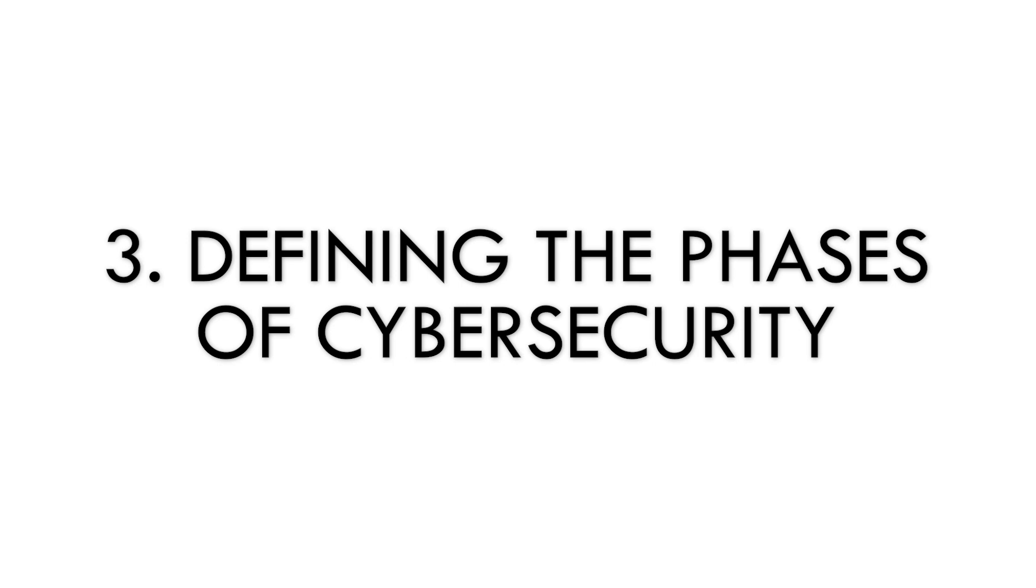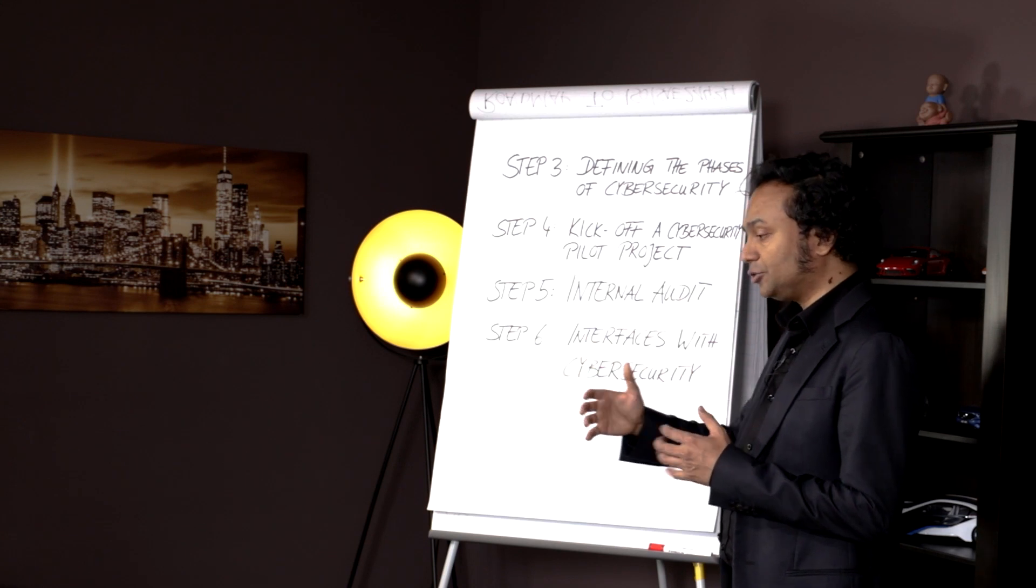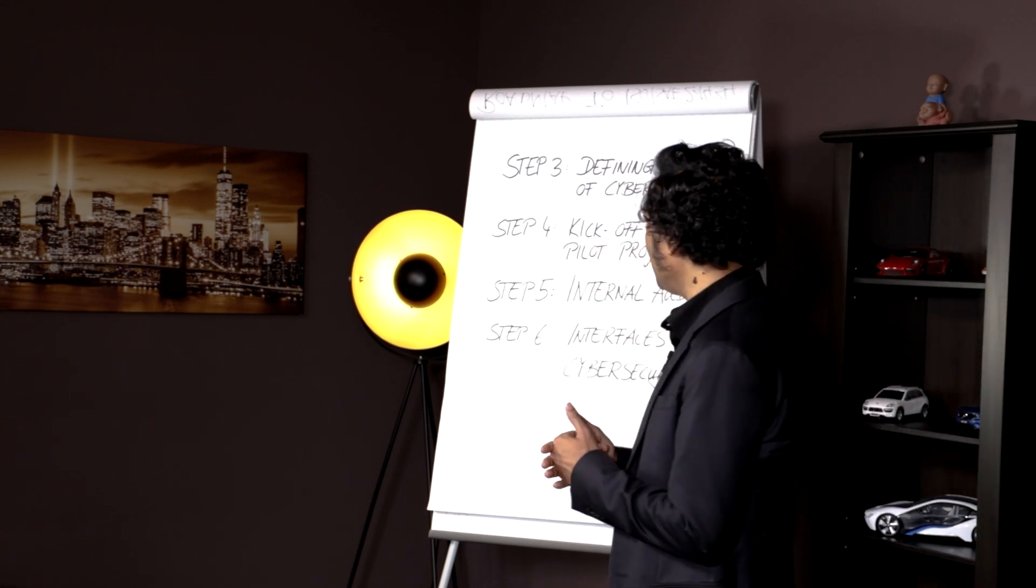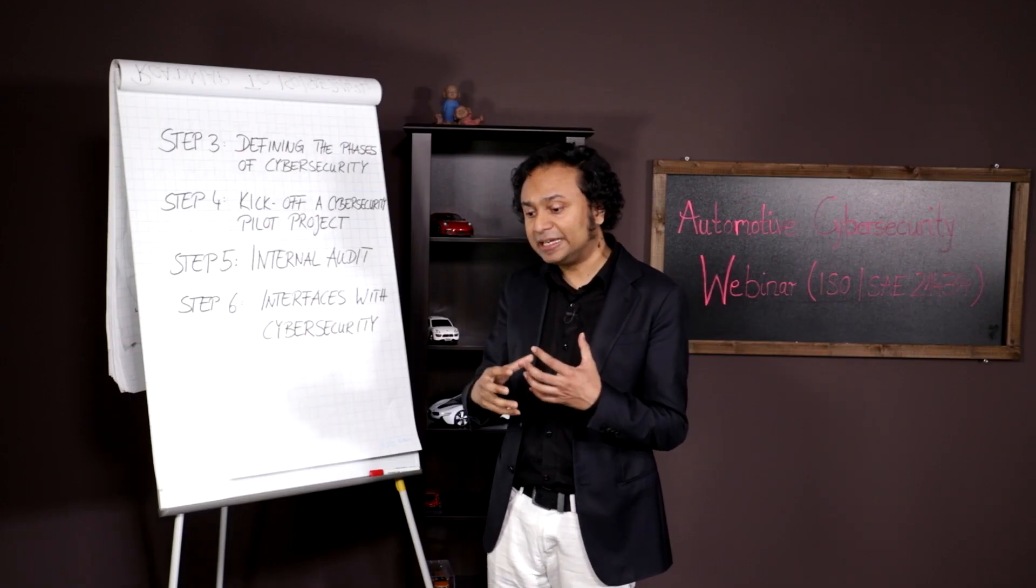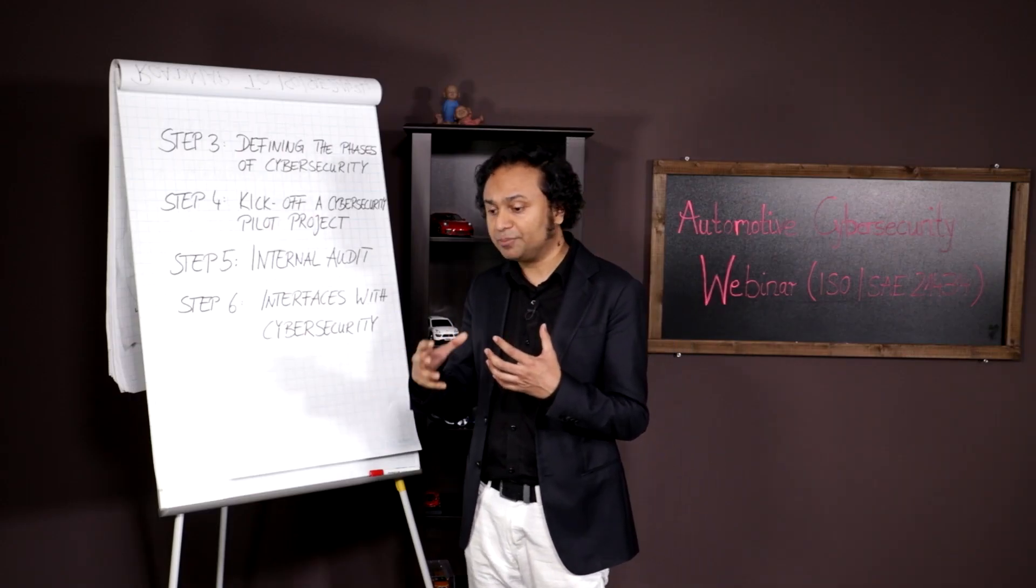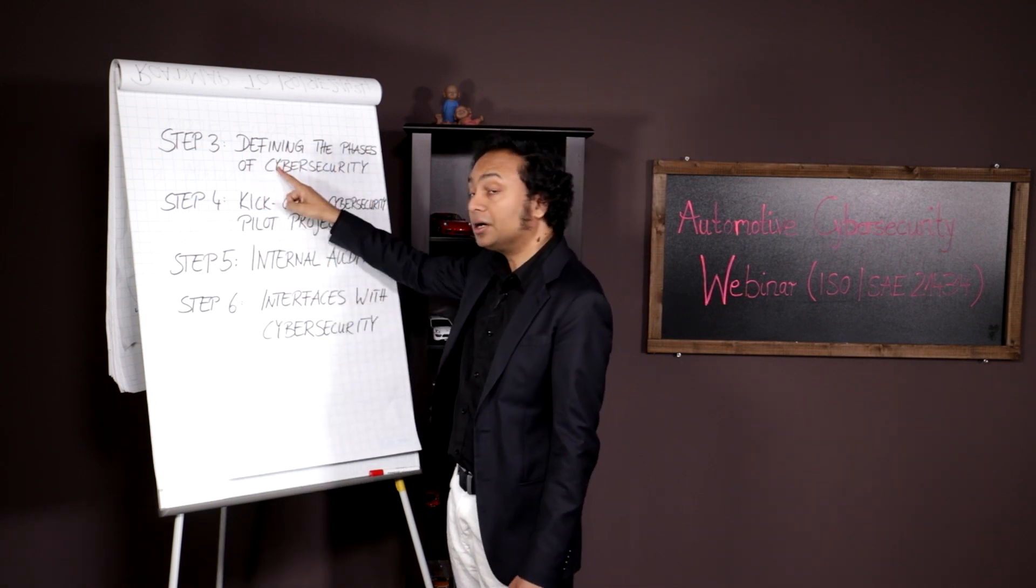Step three is defining the phases of cybersecurity in your project execution or for your entire company. You want to define the phases, you want to go into detail. This is where you're actually defining how the cybersecurity process would be. This is the actual execution part.